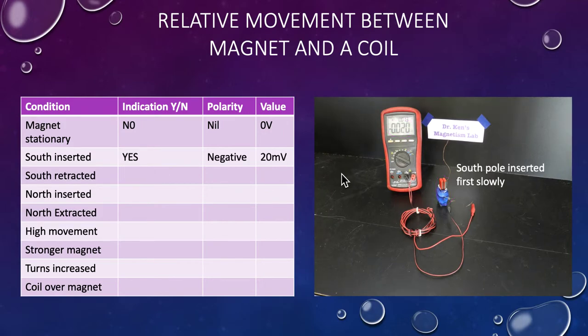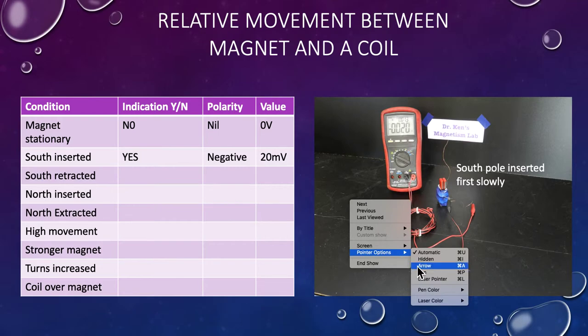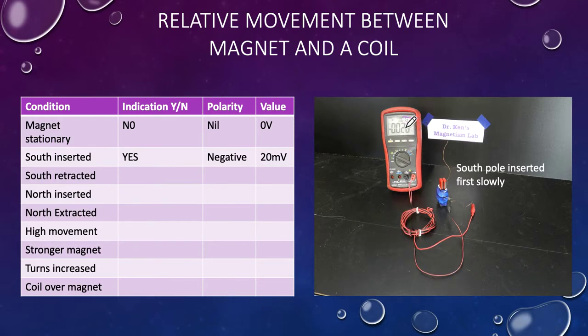The next thing I do is I actually pull the magnet out, and at moderate speed I push it slowly into the coil, and you'll notice straight away we've had a result. We've now got 20 millivolts, but take particular note of the sign - it's a negative 20. So we've got negative 20 millivolts. That's our south pole put in slowly.